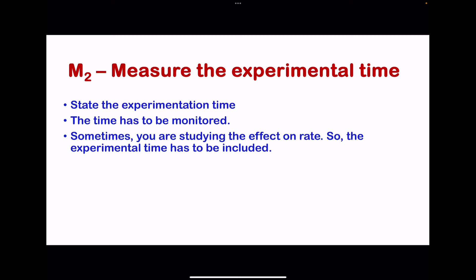M2 is for measurement of the experimental time. It has to be stated. This is important, more so if you're calculating rate, because to obtain any rate we have to divide by the time the experiment was carried out.